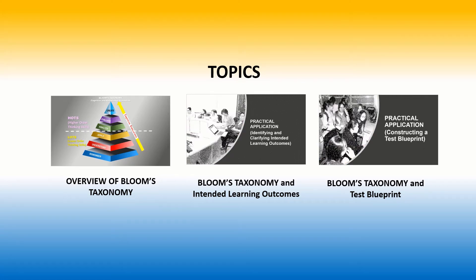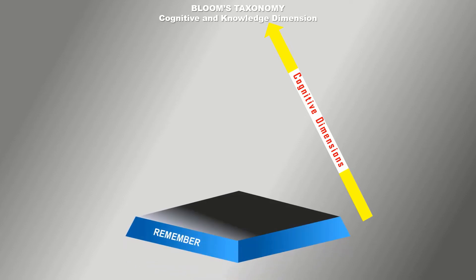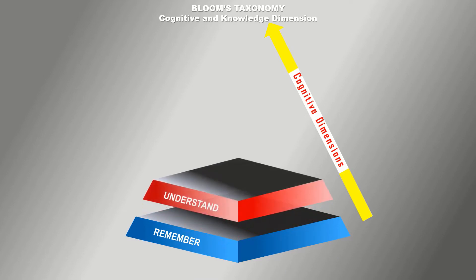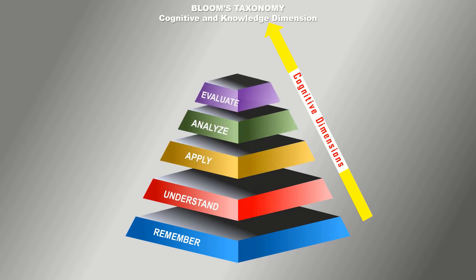Bloom's Taxonomy under the revised edition by Krathwohl and Anderson provides us with two dimensions: the Knowledge Dimension and the Cognitive Process Dimension. The Cognitive Process Dimension covers the complexity of cognitive processes from simple — like Remember, which is the lowest — to Understand, Apply, Analyze, Evaluate, and Create, being the most complex of all the cognitive dimensions.